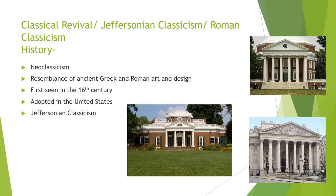The classical revival, Jeffersonian classicism, and Roman classicism styles are all also known as a form of neoclassicism architecture, designed to resemble Roman and ancient Greek art and design. First used as far back as the 16th century during the Italian Renaissance, classicism was used in many forms of art before architecture. As time passed, new buildings were made in Europe after these ideas, and eventually were adopted in the United States.